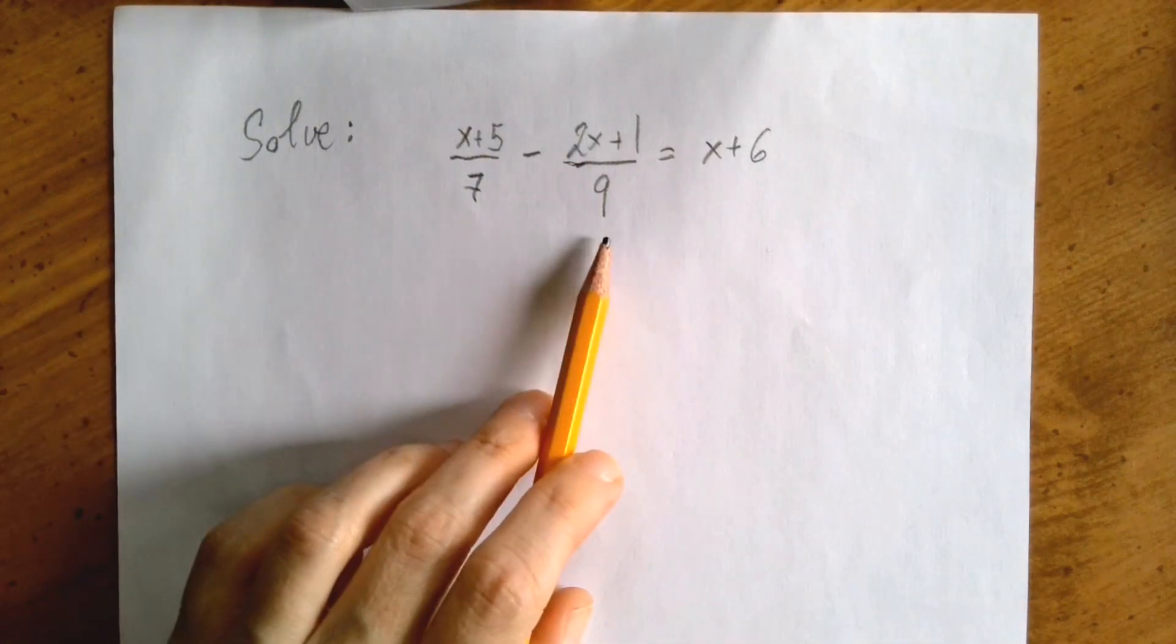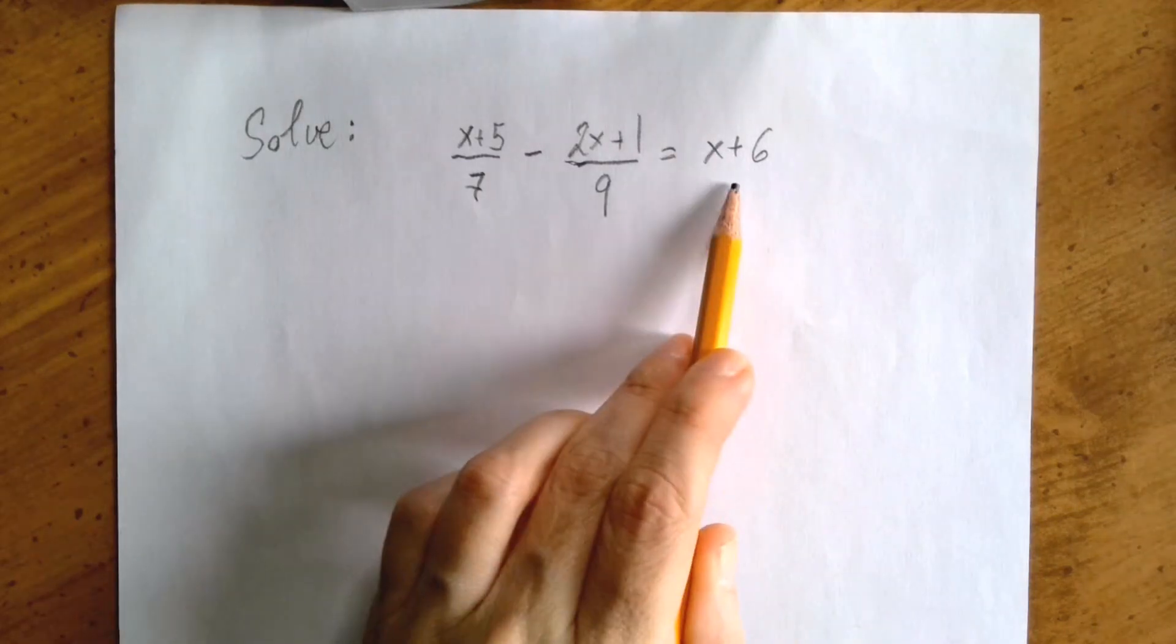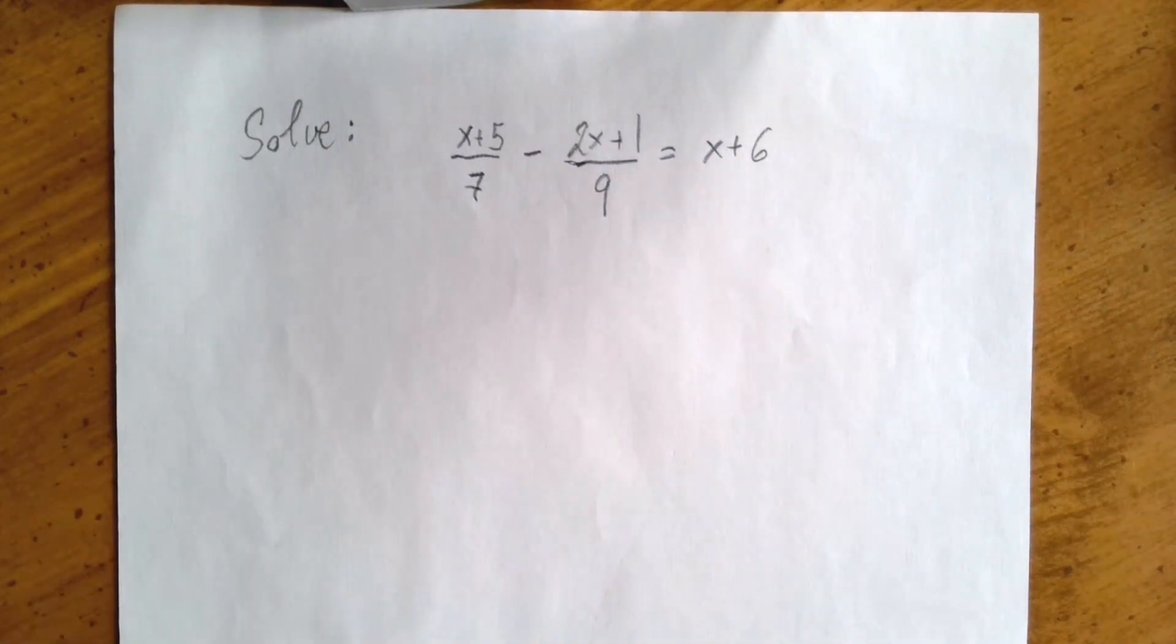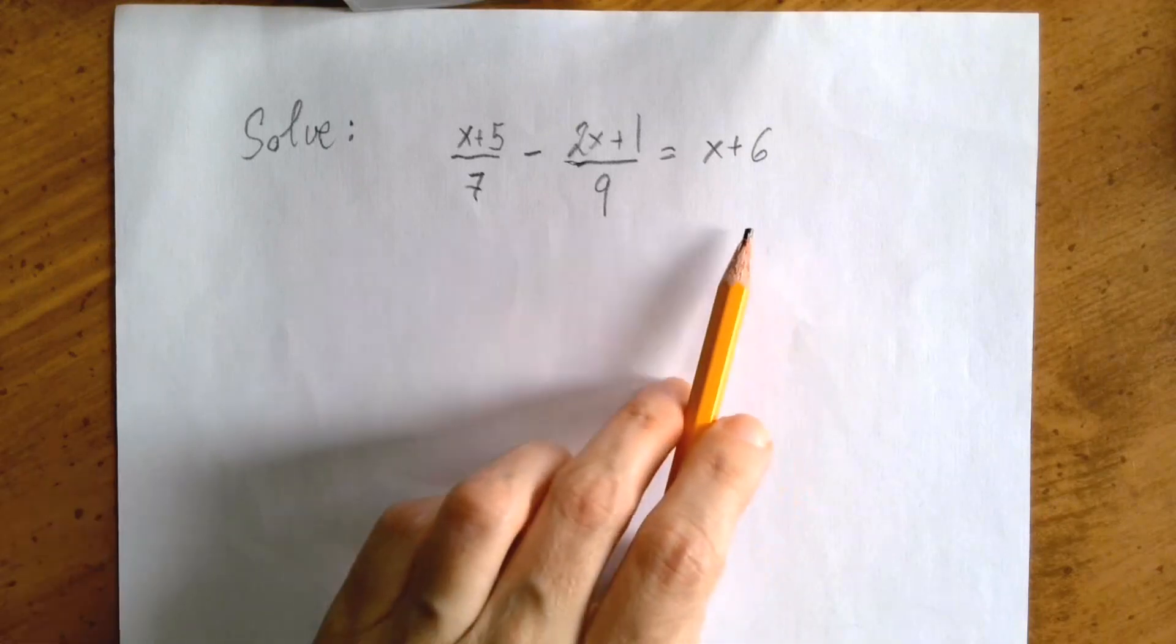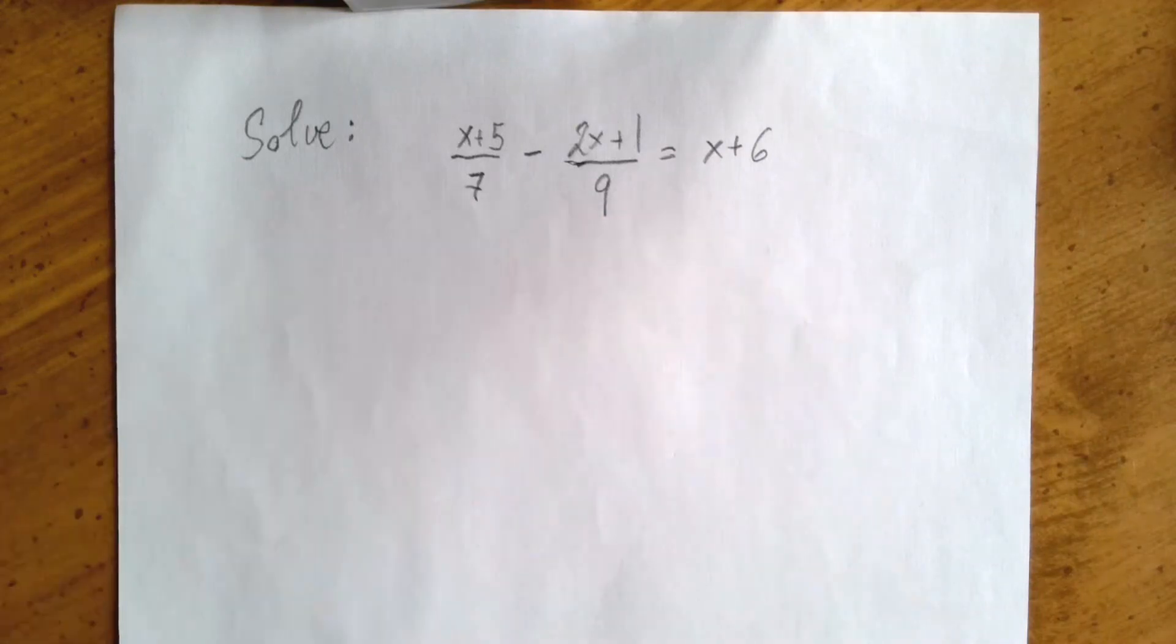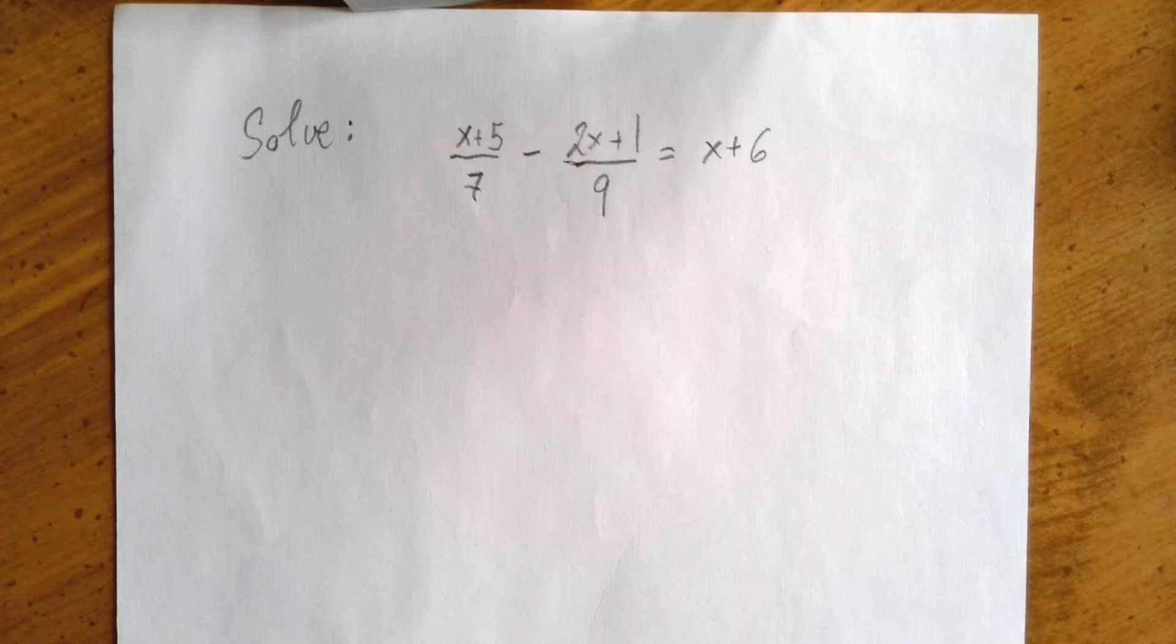This is a fraction, this is a fraction. We can make this as a fraction by adding a 1. We would be rewriting it as x plus 6 over 1.